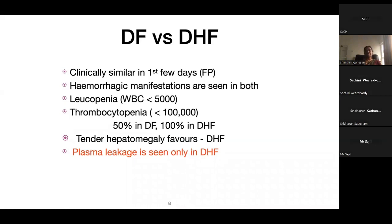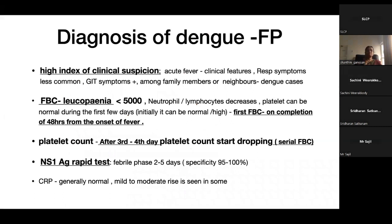In DHF, thrombocytopenia is seen 100% of the time. If a patient has tender hepatomegaly, that favours DHF — though it can be seen after ingestion of NSAIDs. Plasma leakage is seen only in DHF.